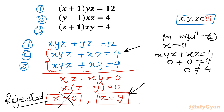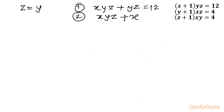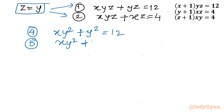Now I will apply z = y to equations 1 and 2. Equation 1, xyz + yz = 12, becomes xy² + y² = 12 — call this equation 4. Equation 2, xyz + xz = 4, becomes xy² + xy = 4 — call this equation 5.